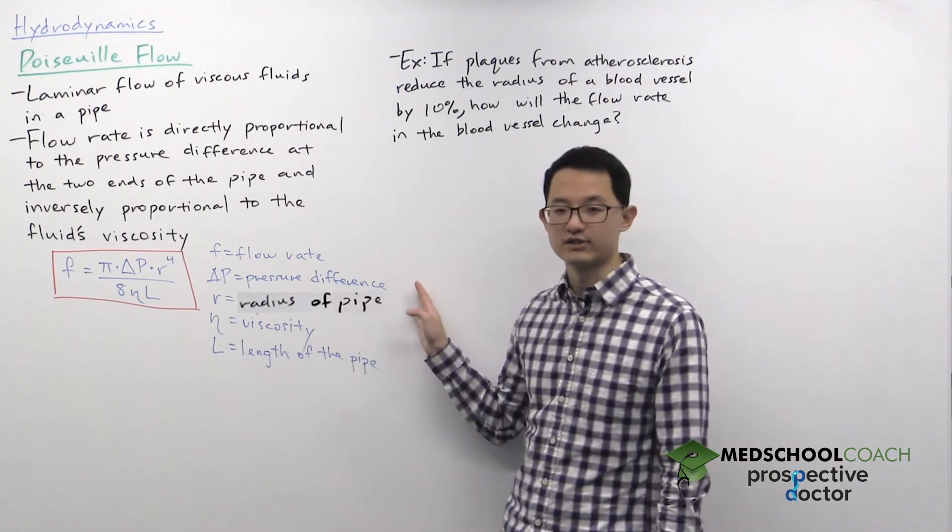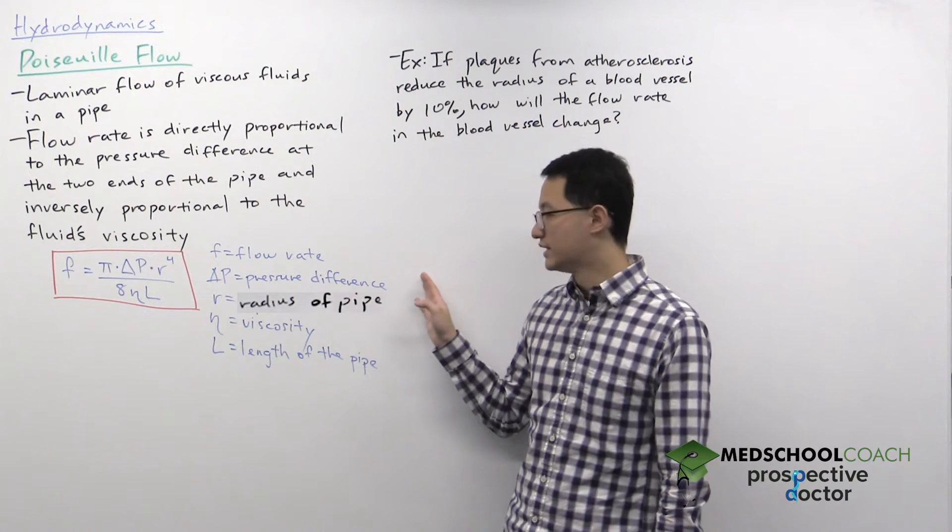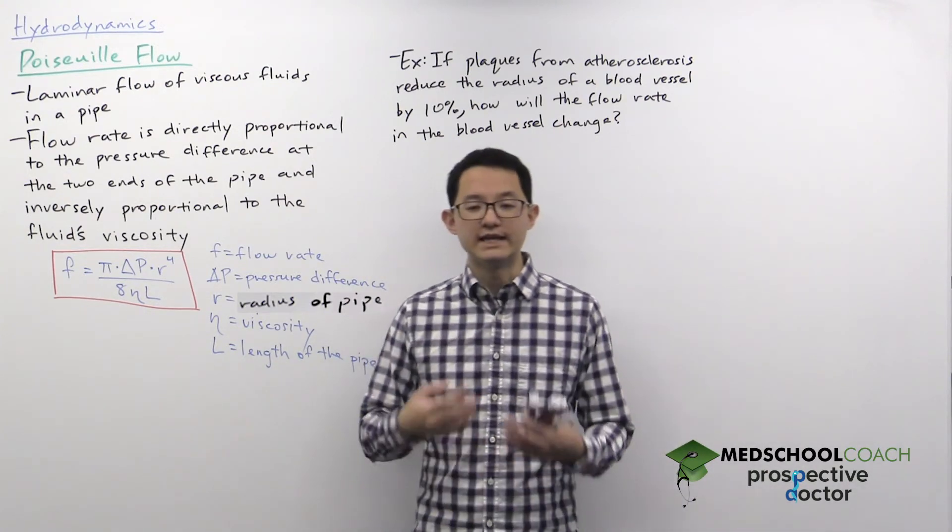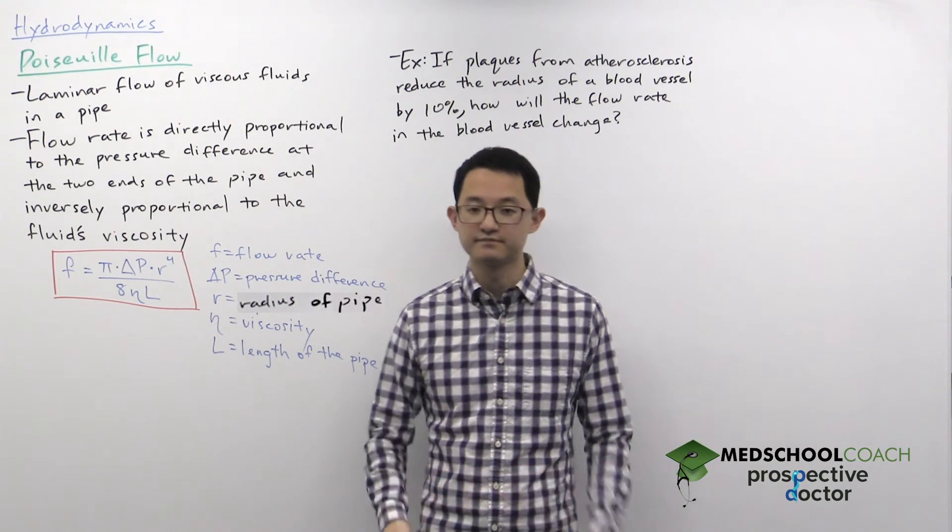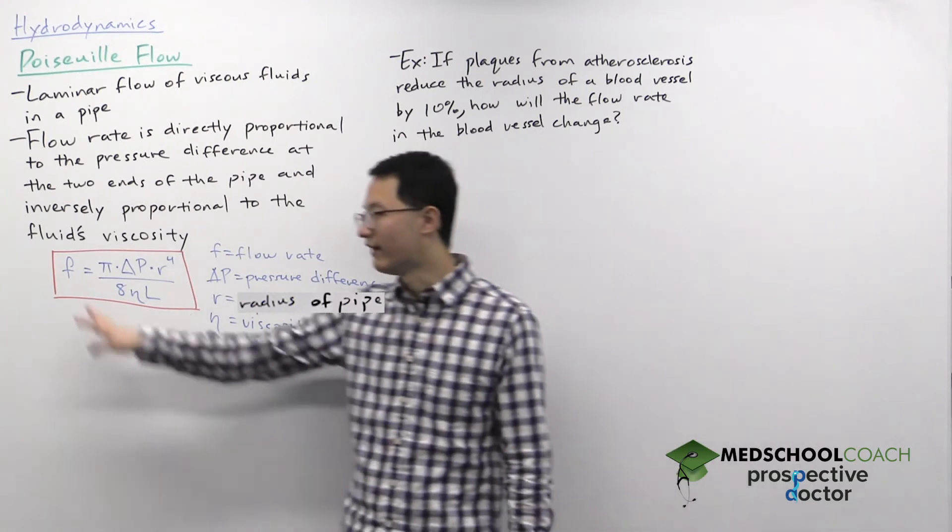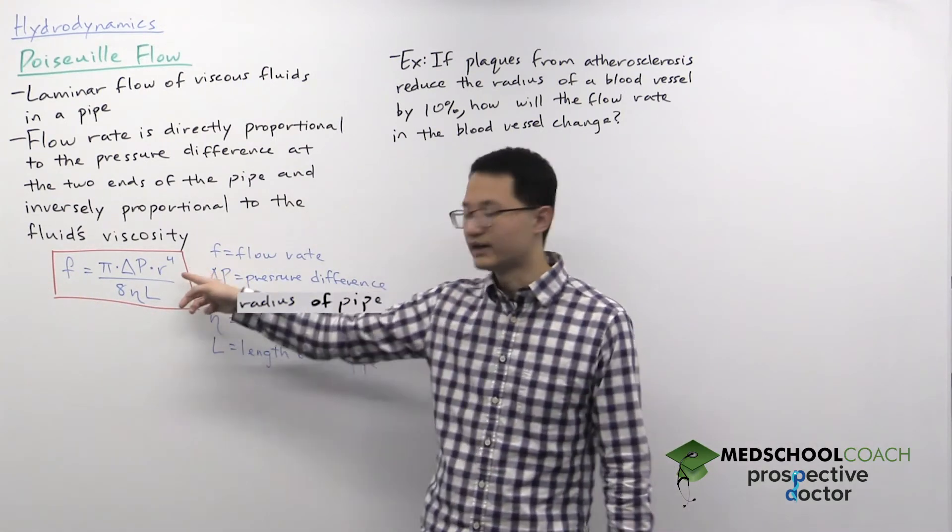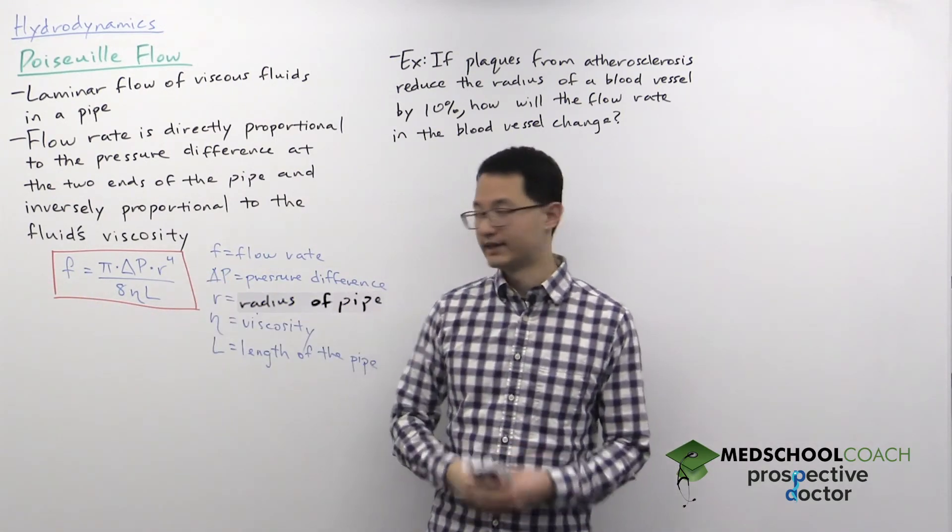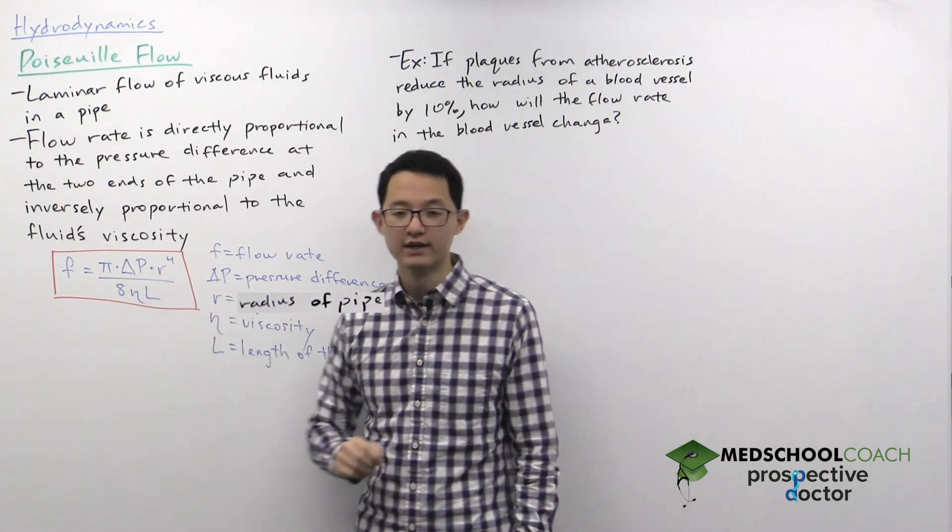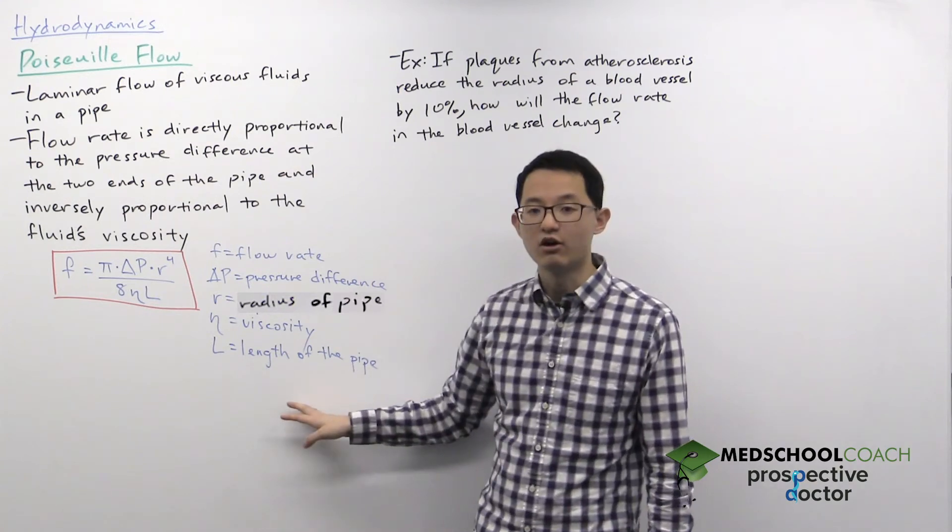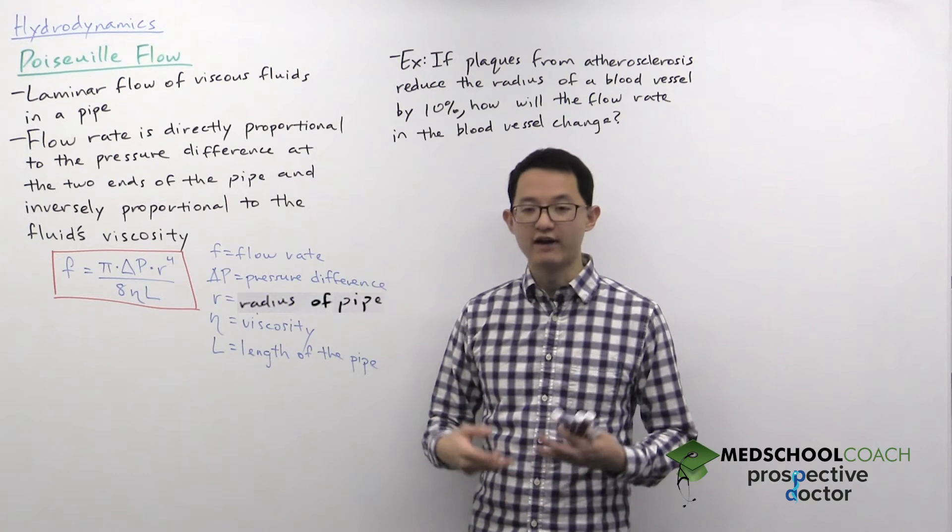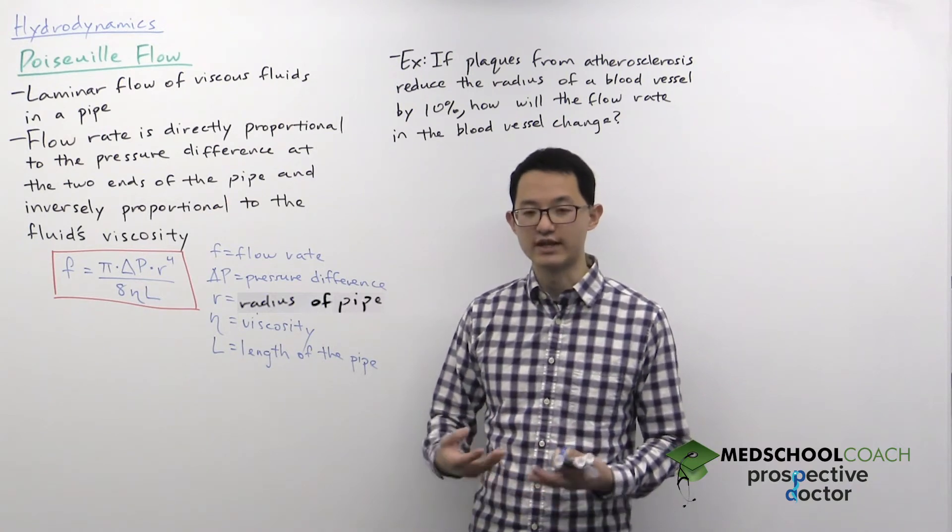The pressure difference is what is driving fluid flow. So if you have a greater pressure difference, that's going to result in an increase in the flow rate. Now, another very important part of this equation is actually looking at how the flow rate depends on the radius of the pipe. This is proportional to the radius to the power of four. So essentially, Poiseuille's law tells us that a small change in the radius will actually produce a very significant change in the flow rate.